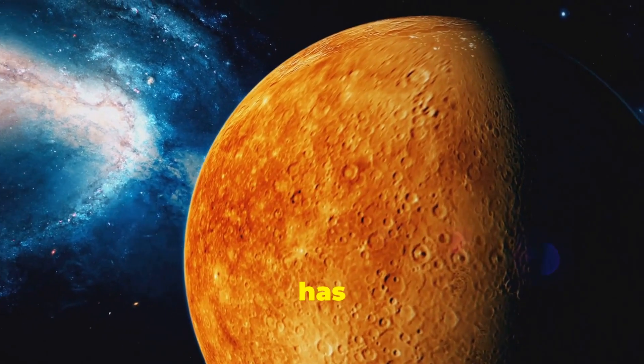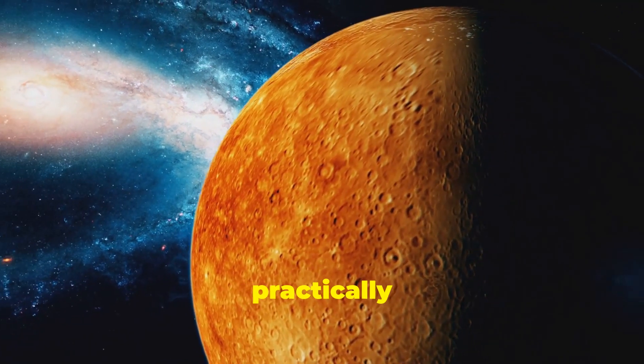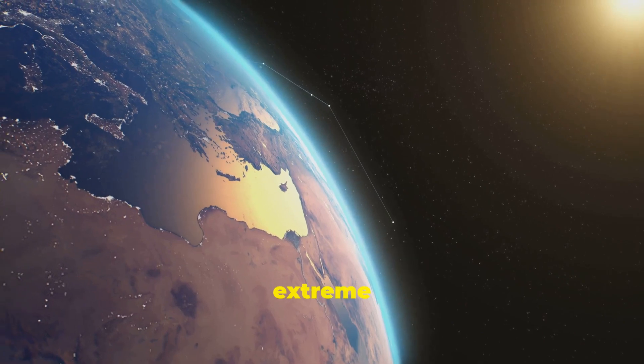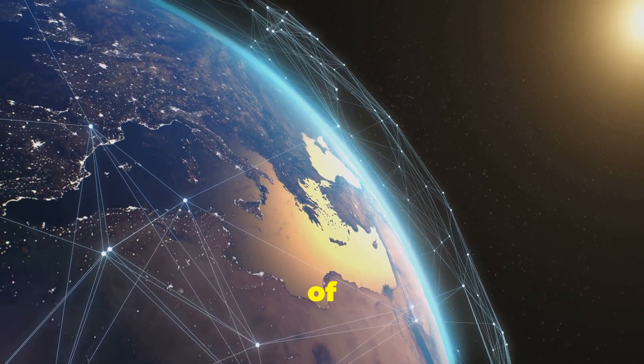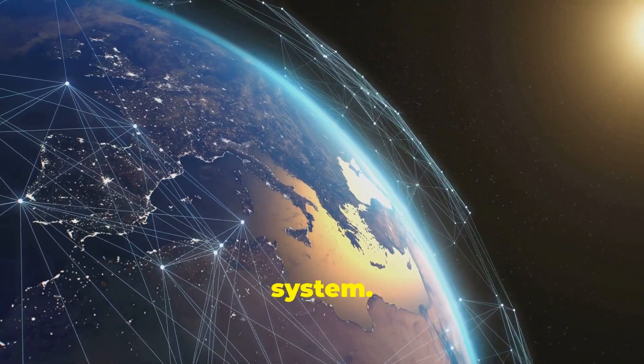Mercury, on the other hand, has a very thin atmosphere, practically non-existent. Venus's extreme heat is a stark reminder of the power of the greenhouse effect and the importance of understanding our own planet's climate system.